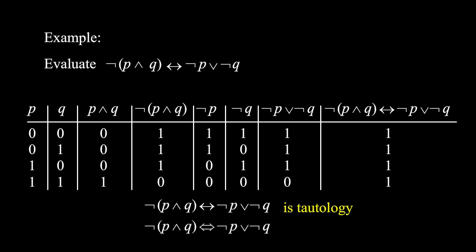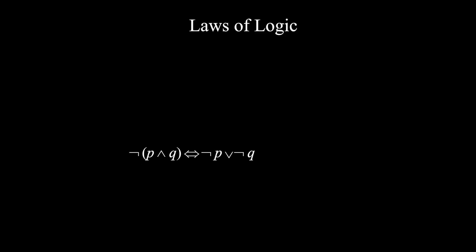And we say that not (p and q) is logically equivalent to not p or not q. Some of the tautologies are considered to be very important, and we call them laws of logic. This one is one of the De Morgan laws. For more about truth tables, check the previous video here, or its link in the description below.